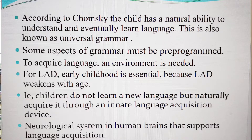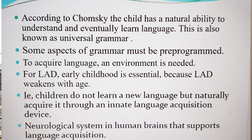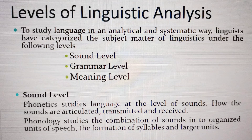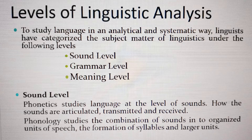The linguist, in order to make scientific statements about language and languages, concentrates at any one time on different though interrelated aspects of the subject matter by attending to different types of features and by applying different types of criteria. These different and partial approaches have been called levels of analysis, and the statements made about them, levels of linguistic statement.